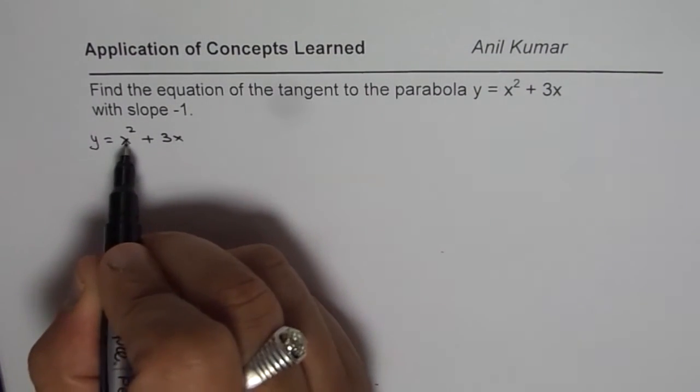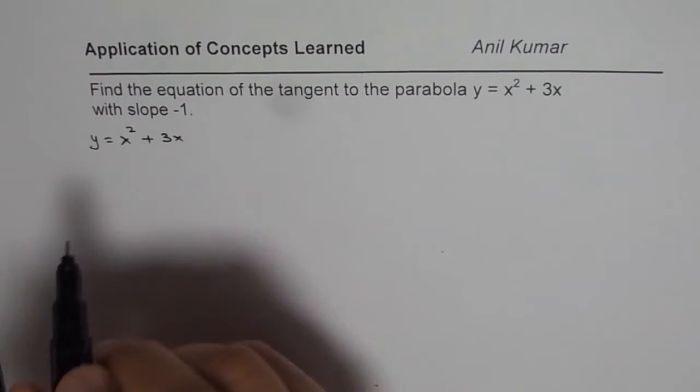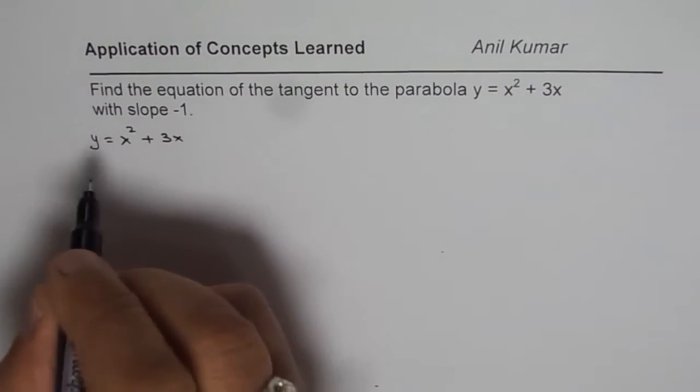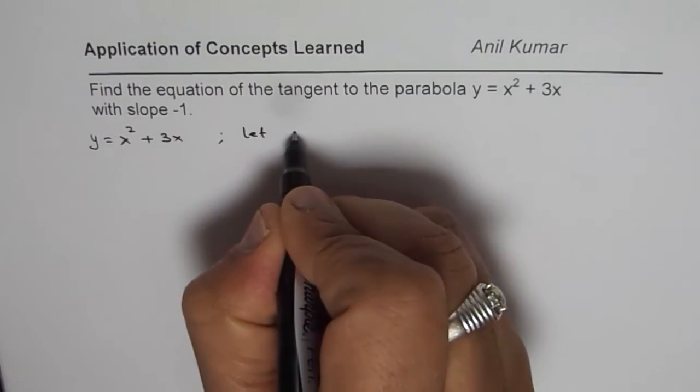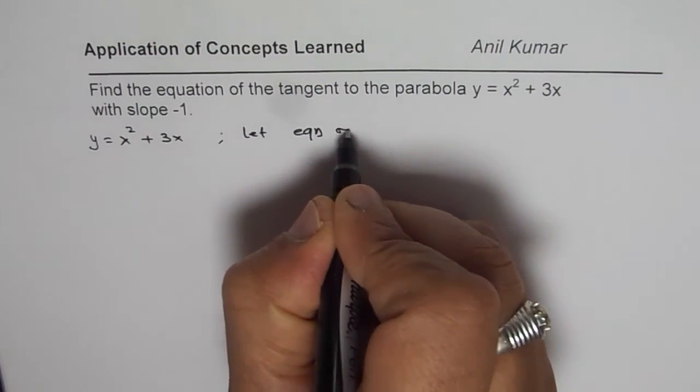So, at that point we will have both x, y values same, correct? So, let us say equation of tangent line is, so let us say, let equation of tangent be,